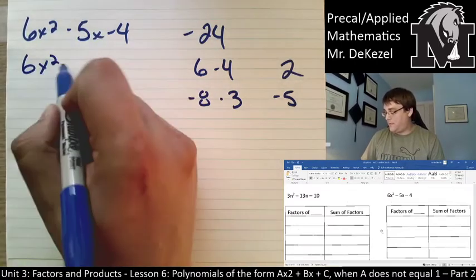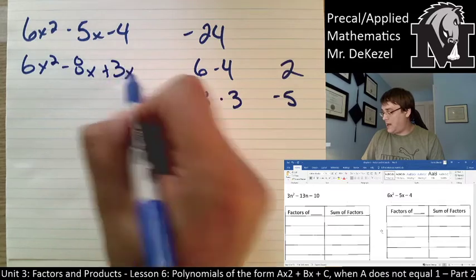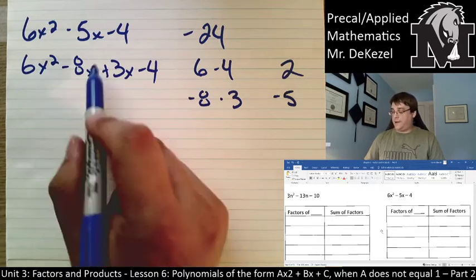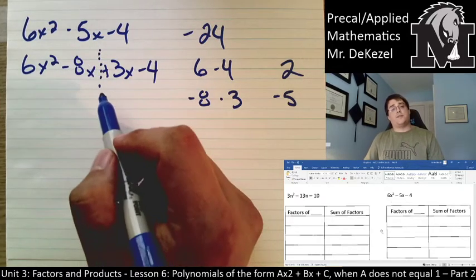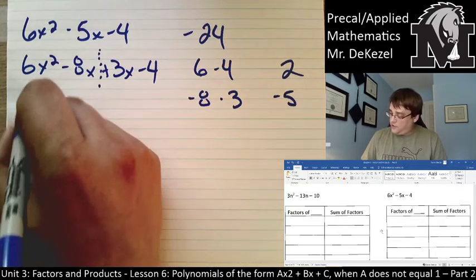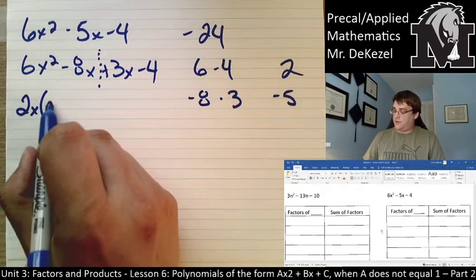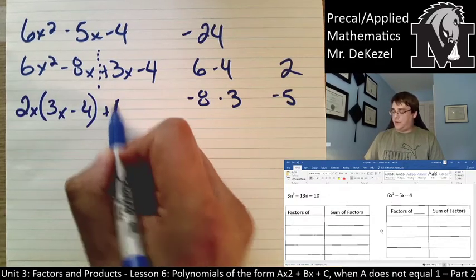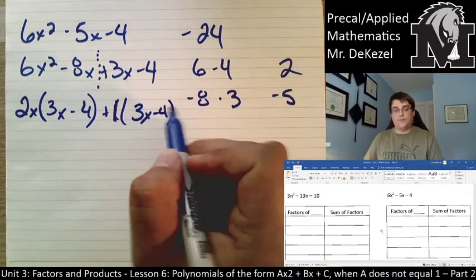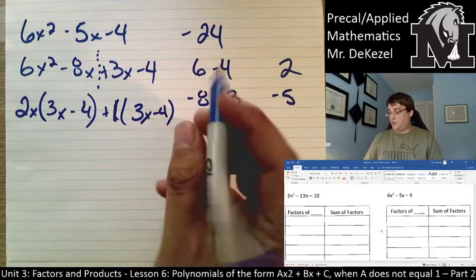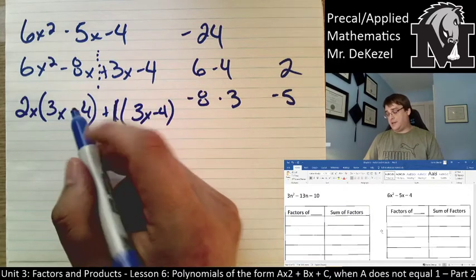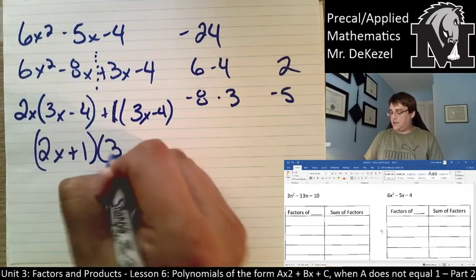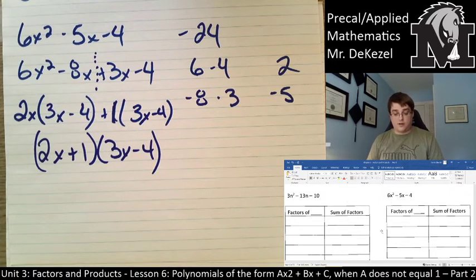So, we're going to break up this term into those two pieces. 6x squared minus 8x plus 3x minus 4. We are then going to draw a line here and factor something out of the front and the back. So, we can have 2x factored out here. That would leave us with 3x minus 4. And we can have a 1 factored out of the back part. So, that would leave us with 3x minus 4 because the greatest common factor between those two is 1. I can then pull out the part in the brackets towards the back and be left with 2x plus 1 in one set of brackets and 3x minus 4 in the next.